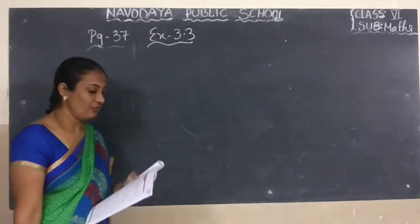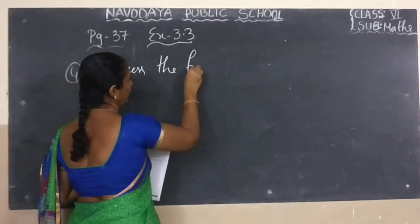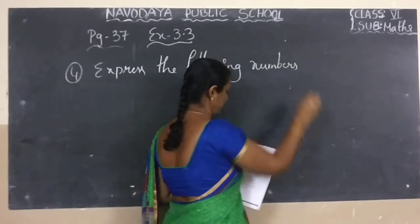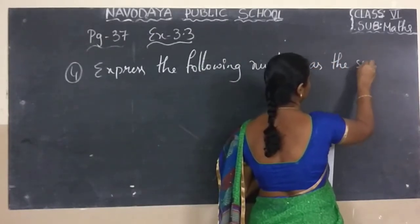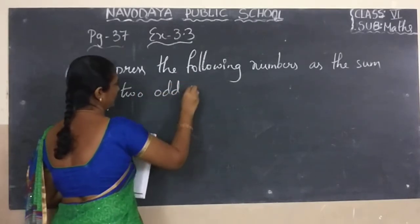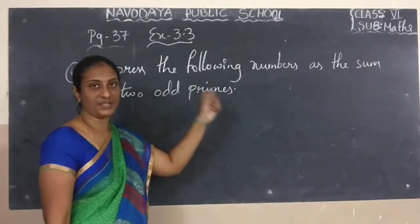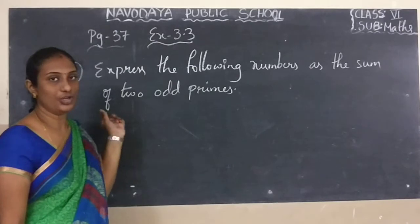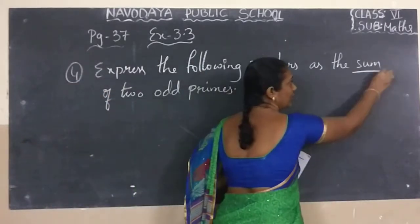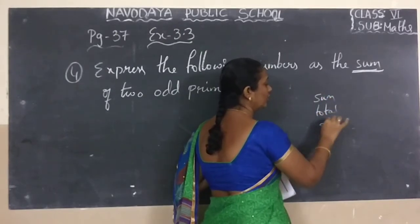See the next one — fourth question. What is the fourth question they have given? Express the following numbers as the sum of two odd primes. Sum means what we have to do? Sum means we have to do addition. Sum, total, all, more than — like this words, if you get in the question, we have to do addition.